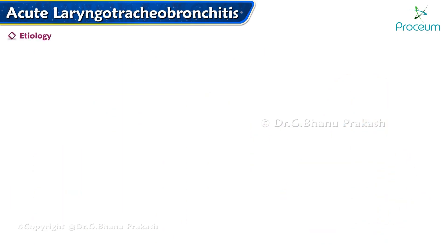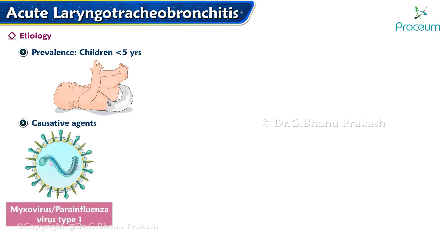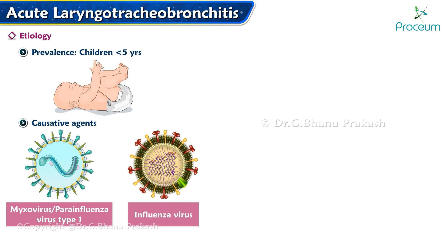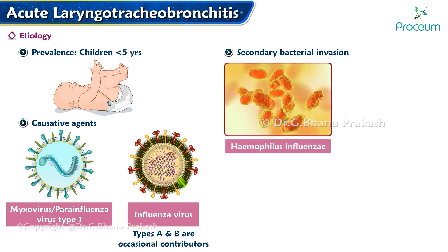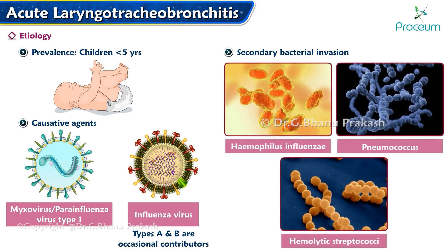Etiology and Prevalence: This condition is commonly observed in children aged below 5 years. It is frequently linked with myxovirus and parainfluenza virus type 1. Influenza virus types A and B are also occasional contributors, with potential for secondary bacterial invasion involving pathogens like Haemophilus influenzae, pneumococcus, and hemolytic streptococci.